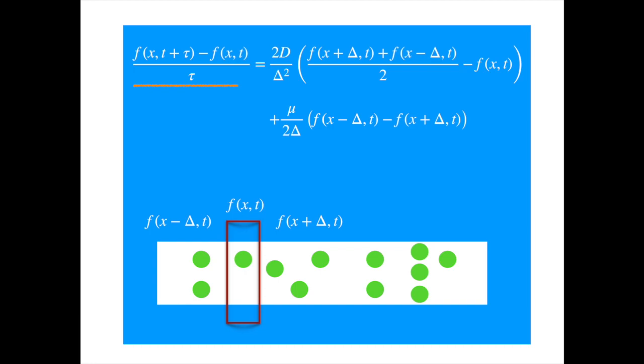And the first term on the right hand side is again telling us that if the average number of particles around the point x is higher than the number of particles at location x, then we shall see the number of particles at x increasing with time. So the particles diffuse from higher concentration to low concentration.